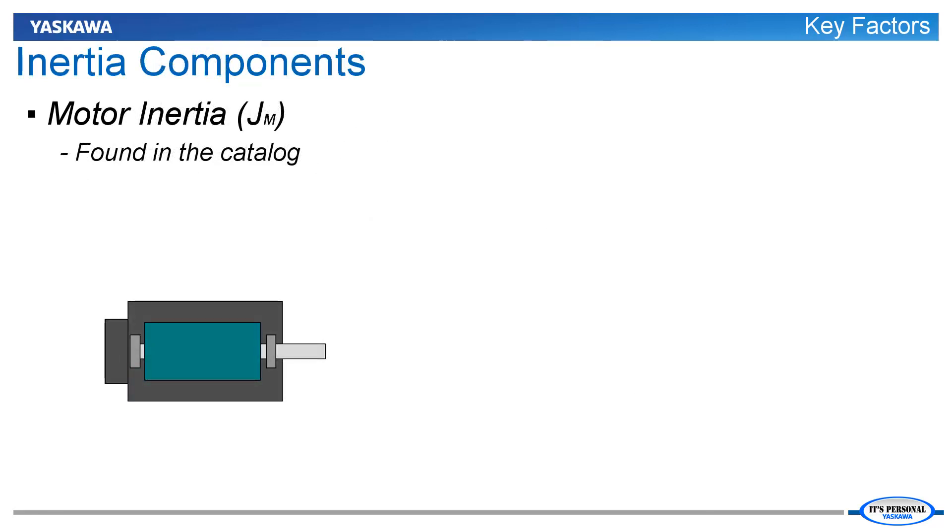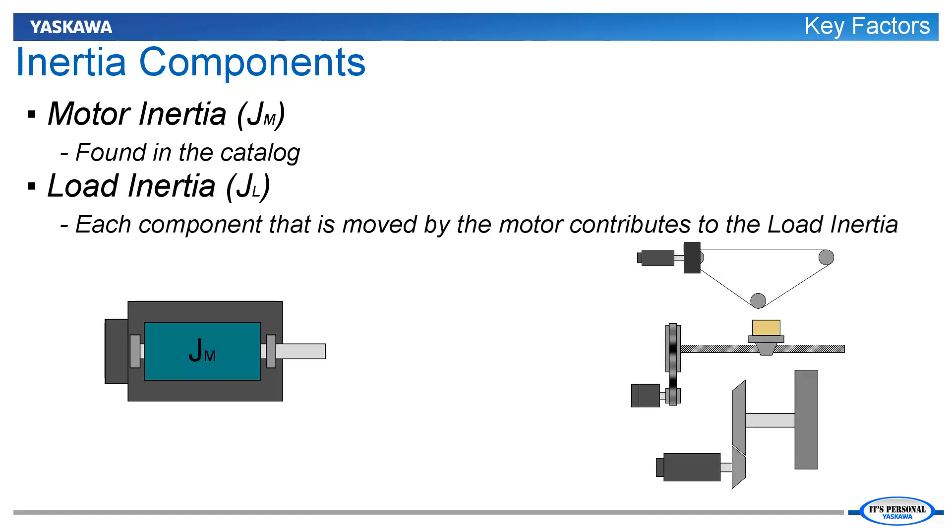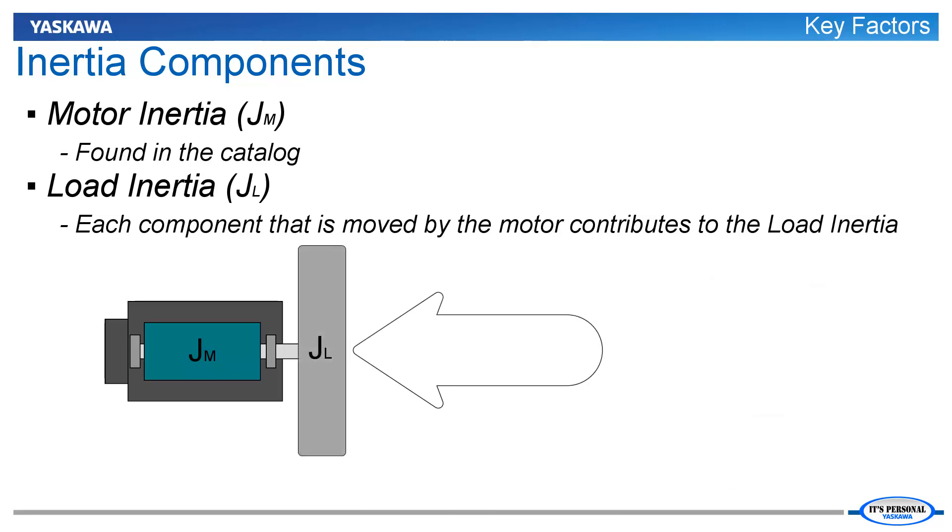The motor inertia, JM, is part of the design of the servomotor and is listed in the catalog. However, the load inertia, JL, often consists of many components. Each component that is moved by the motor contributes to the total load inertia. The total load inertia is found by using the proper equations for each component.